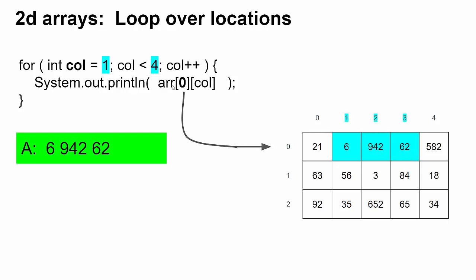In order to think about two dimensional arrays, you have to keep straight in your head. What does the first number mean? And what does the second number mean? You have to keep straight it's a row and a column. And then if you're looping, you have to think about what's staying the same and what's changing.